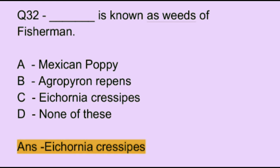Question number 32. Which is known as the weed of fishermen? Option A: Mexican poppy. Option B: Agropyron repens. Option C: Akornia crassipes. Option D: none of the above. The correct answer is option C, which is Akornia crassipes.